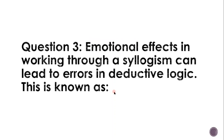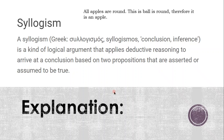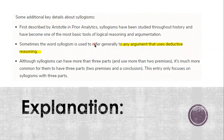Question three. Emotional effects in working through a syllogism can lead to errors in deductive logic, and this is known as a belief bias. A syllogism is a kind of logical argument that applies deductive reasoning to arrive at a conclusion based on two propositions assumed to be true. For example: 'all apples are round and this ball is round, therefore it is an apple' — that's actually not a syllogism. Syllogisms were first described by Aristotle in Prior Analytics and have become one of the most basic tools of logical reasoning and argumentation.